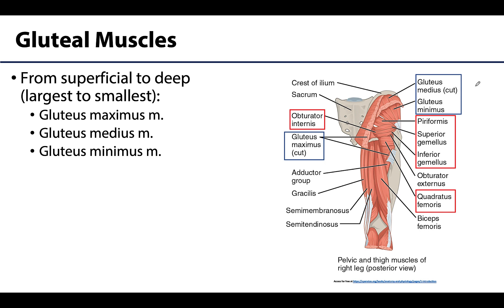Starting with the superficial group, we have the gluteal muscles, which are organized from superficial to deep as well as from largest to smallest: the gluteus maximus, the gluteus medius, and then the deepest and smallest is the gluteus minimus.